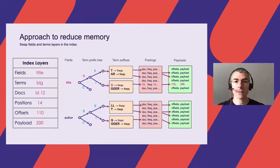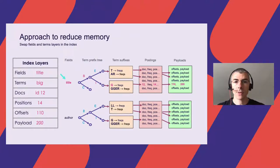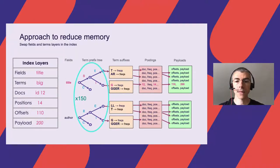Here is the structure of the Lucene inverted index. On the left you can see the index layers ordered from top to bottom; on the right, the index structures corresponding to each layer. For example, if we search the term 'big' in the title field, Lucene gets the term dictionary for that field, seeks the term, then gathers data from the postings and payloads — such as IDs of documents containing the term and positions of the term in each document. In our context, the big memory issue is that with 150 fields we have 150 dictionary trees in memory.